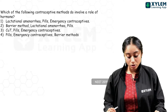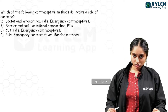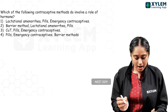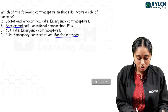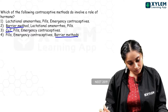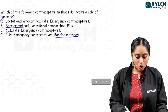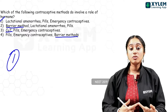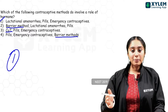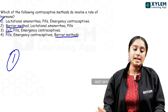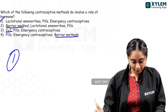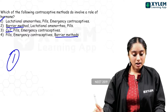Which contraceptive methods involve a role of hormones? CuT is a copper-releasing contraceptive — no hormones involved. The answer is option 1: lactational amenorrhea involves hormones in the body preventing menstruation for at least 6 months after birth; hormonal pills and emergency contraceptives obviously involve hormones.